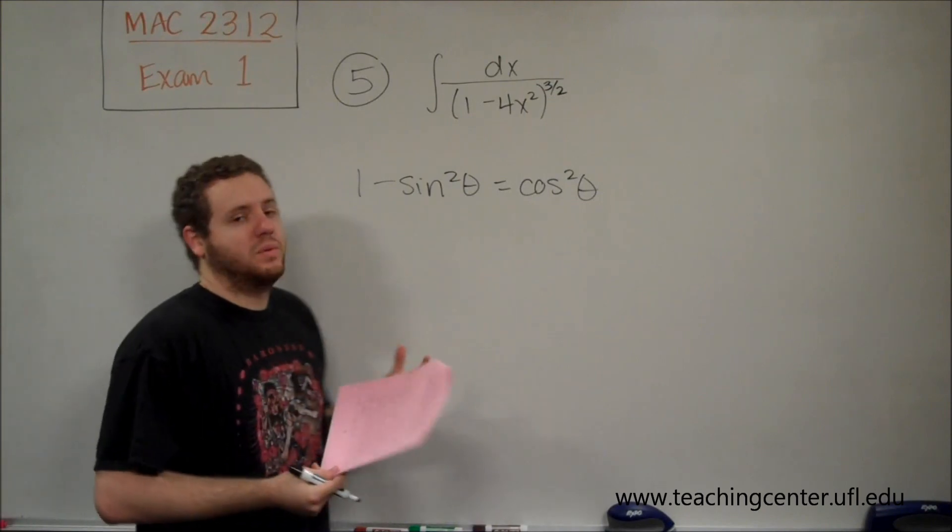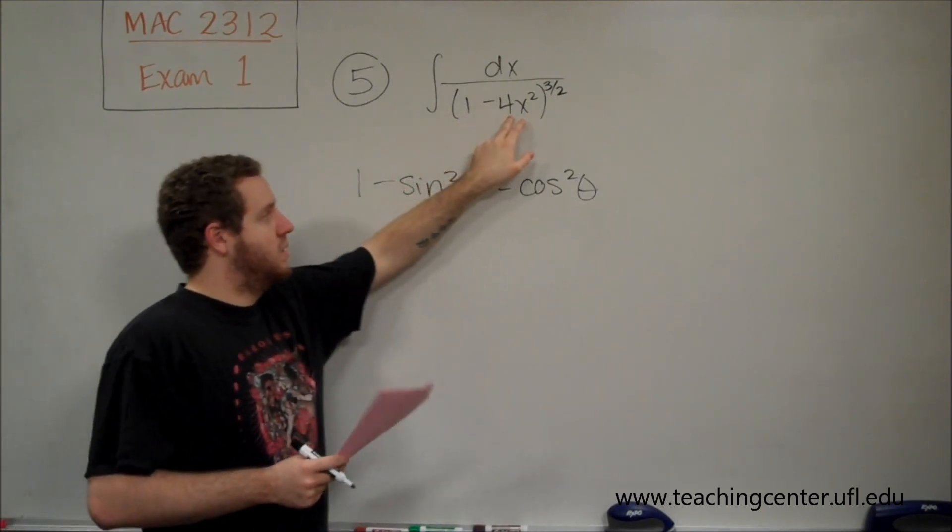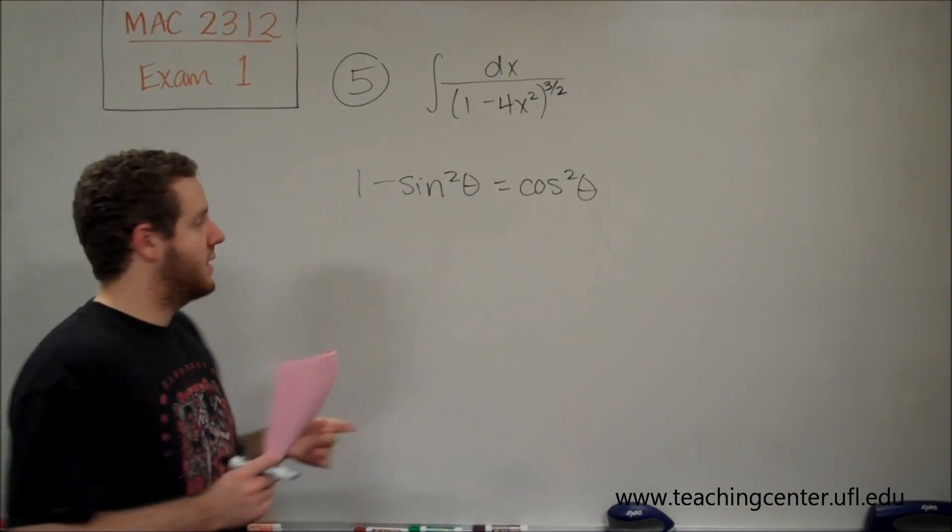So we just need to figure out what the coefficient has to be. Now, in this case, our number is already a 1, so we need to get rid of that 4 so that we have our identity set up correctly.